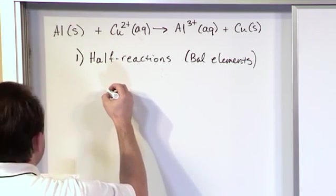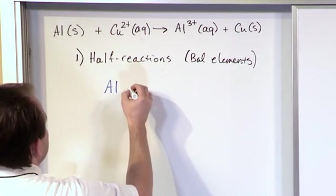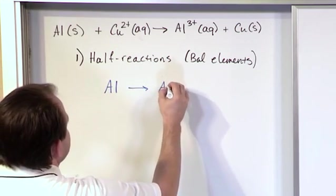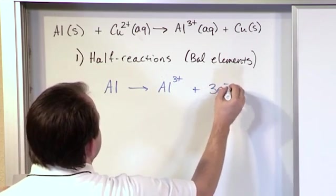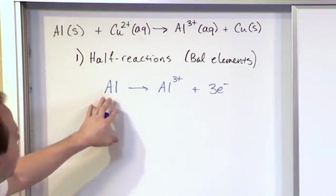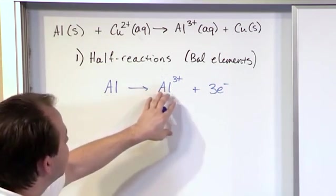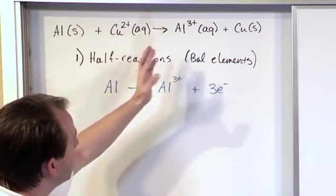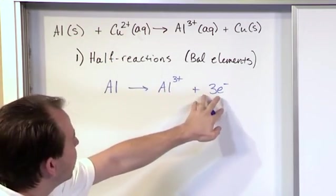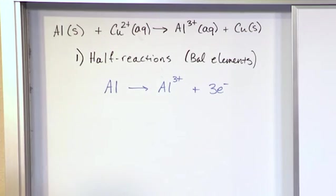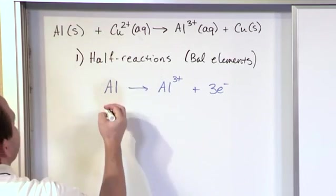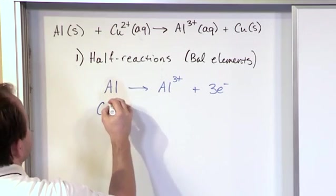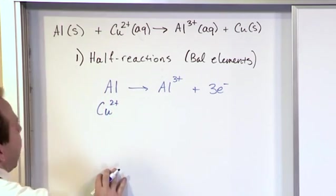So in this case, we have aluminum giving us aluminum plus three electrons. Now in this case, the element is balanced. The aluminum element is already balanced because it was actually already balanced up there. And the three electrons comes from the previous problem when we had three electrons there to give us this ion. Now let's look at the copper. We start with copper, right? Okay. And...